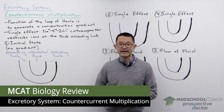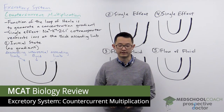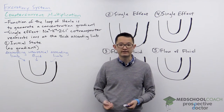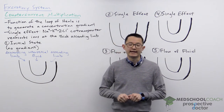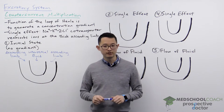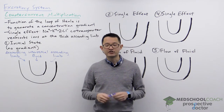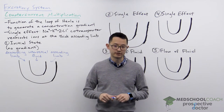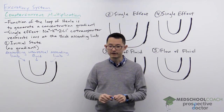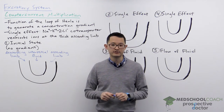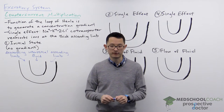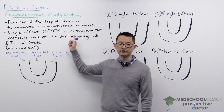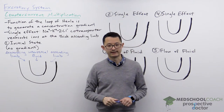In this video we're going to go over counter current multiplication. So far in our discussion on the kidneys we've been talking about this concentration gradient — that in the cortex of the kidneys there is a low solute concentration, and as you move deeper into the kidneys there is an increase in solute concentration. However we haven't discussed where this solute concentration gradient comes from, and as we're going to see in this video, this concentration gradient is produced by the loop of Henle.